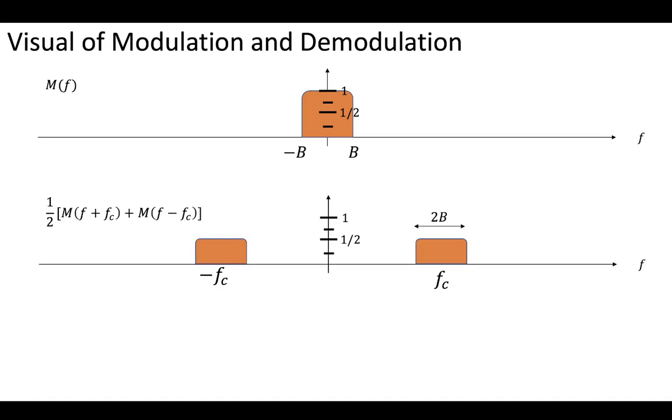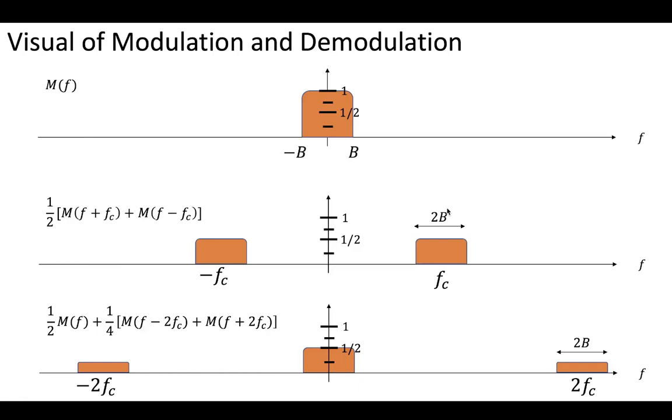If we modulate that message, so our original message has been modulated by a cosine wave with a carrier frequency, that shifts our message out to plus or minus Fc. It's containing that same bandwidth, but it's just been moved down to one half.